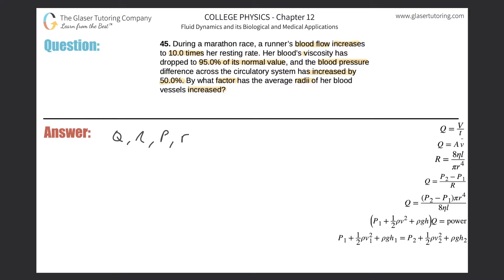Now what we need to do is identify an equation that relates all these variables. This is pretty straightforward — we'll use Poiseuille's Law. The blood pressure difference can be represented as delta P, and just like in the formula, P1 minus P2 is essentially delta P.